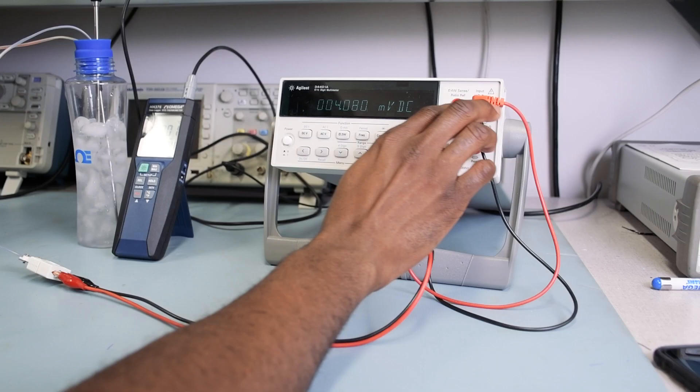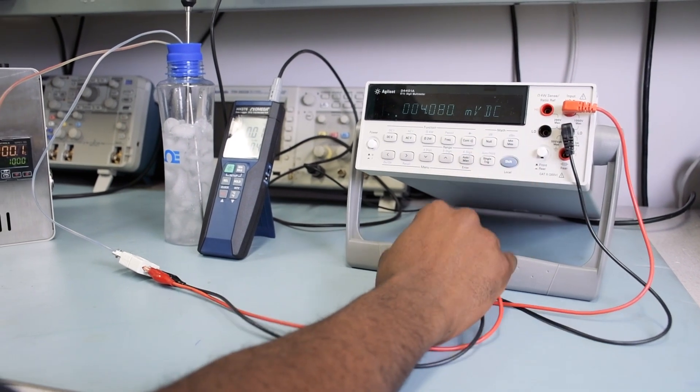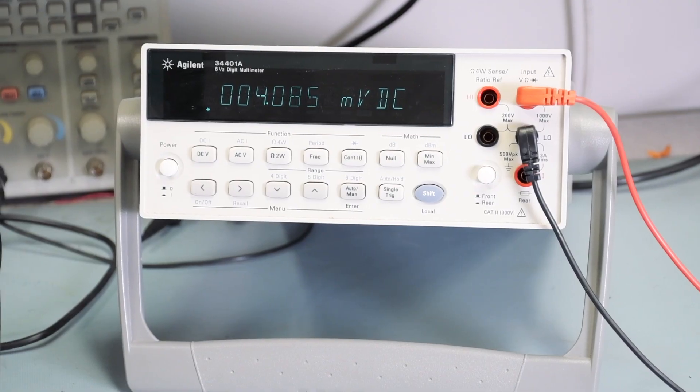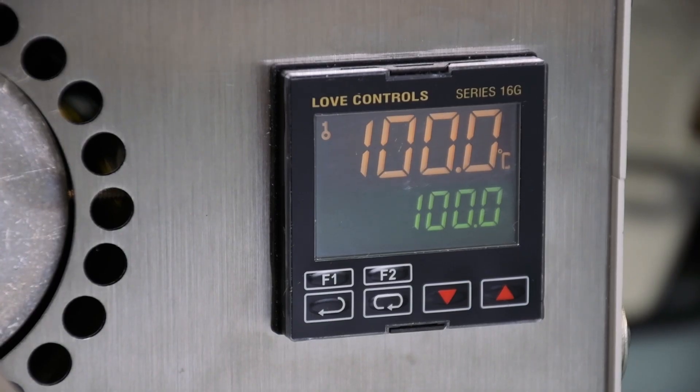Then we have the other side of the reference probe connected to a digital multimeter that's giving us the raw millivolt signal from the thermocouple. And as you can see on the multimeter, the millivolt signal matches the temperature of the dry block. So this thermocouple passes our mock calibration.